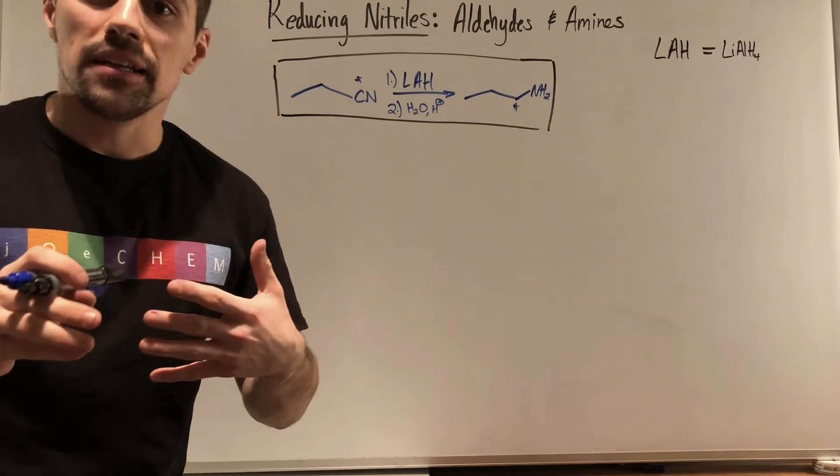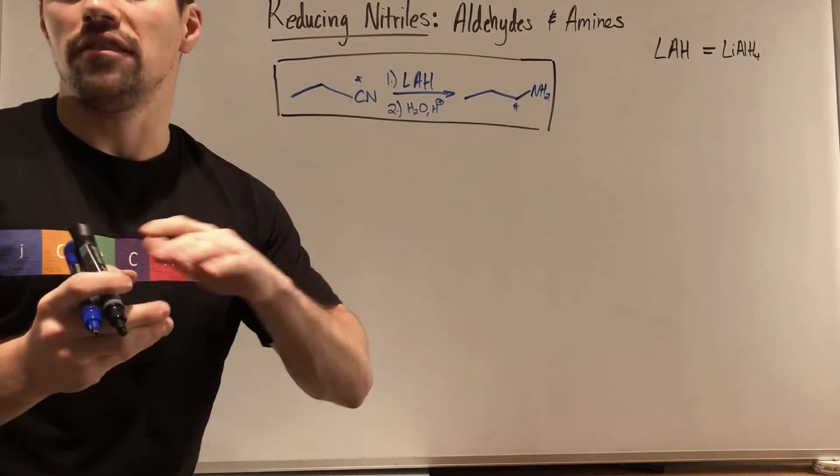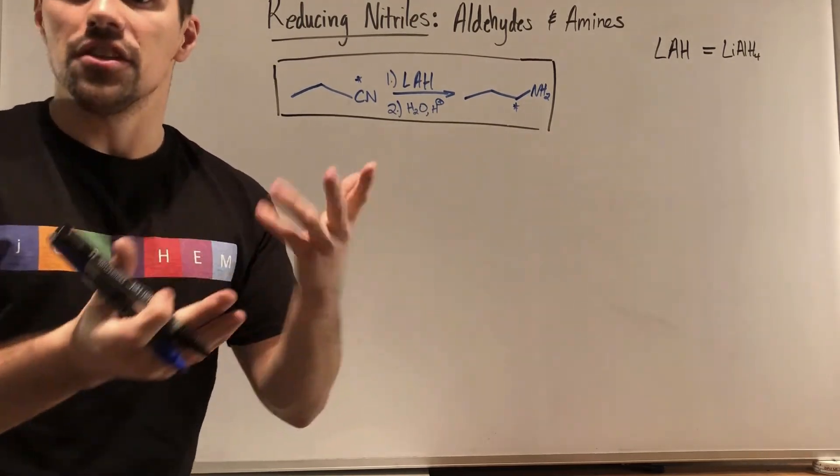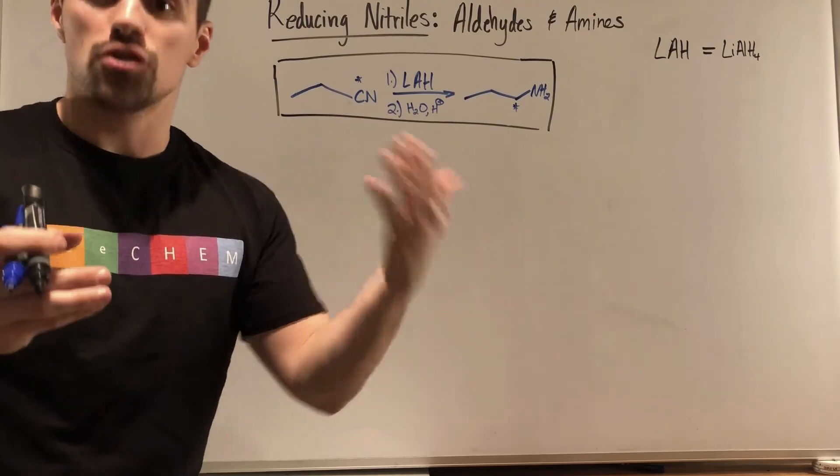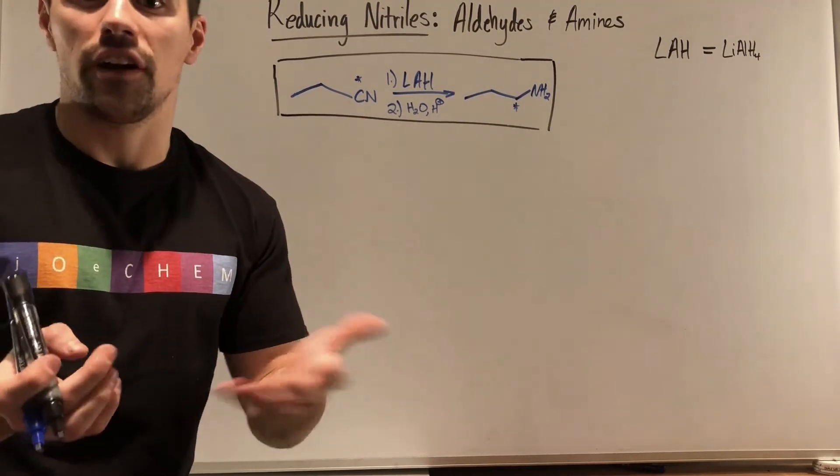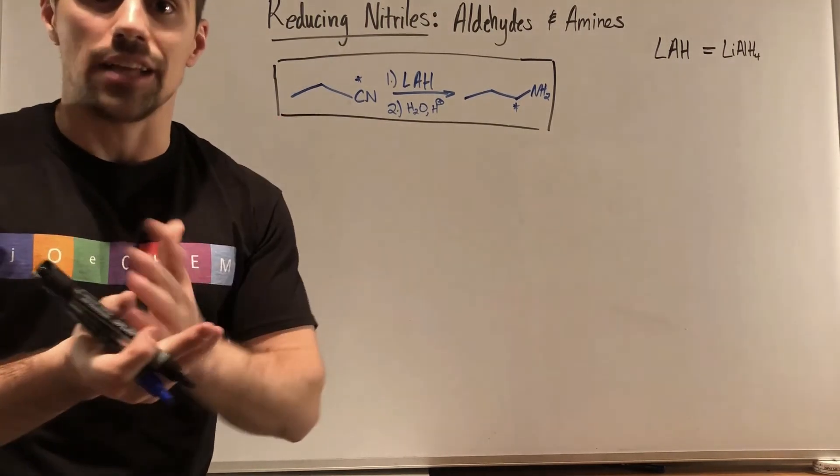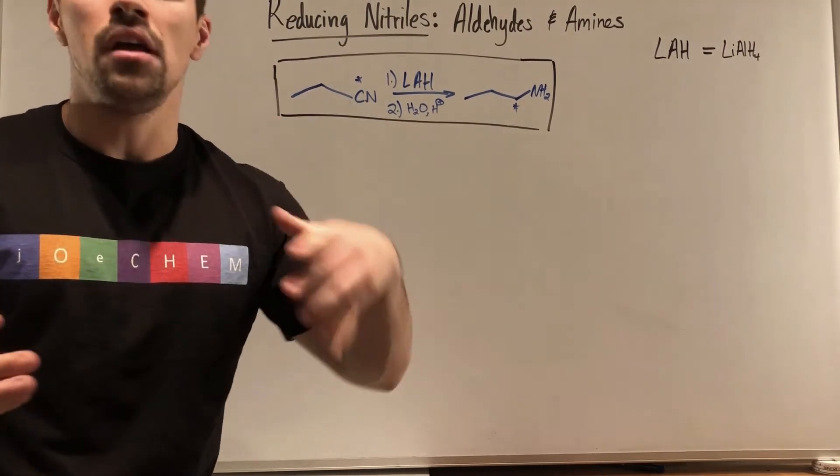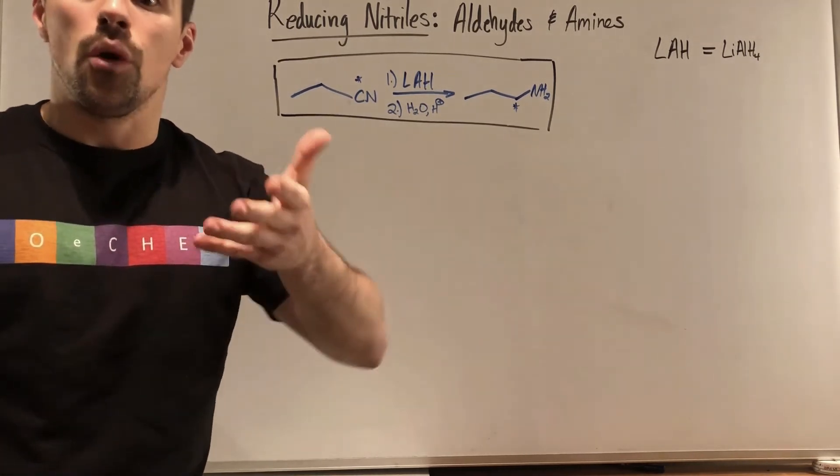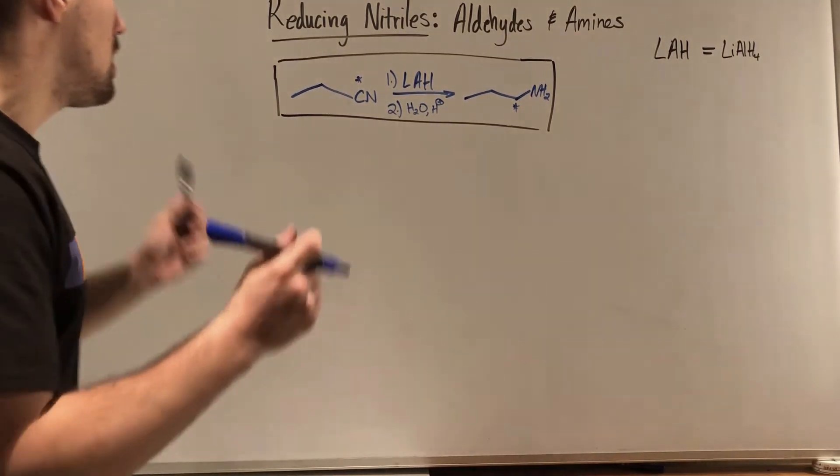So same starting material, same nitrile. We're just going to use lithium aluminum hydride. We're going to have the same acidic workup. And instead of a carbonyl, namely an aldehyde, we're going to get an amine instead. Just as a warning, this mechanism is a little bit more complex than what I'm going to draw. I'm going to draw what I've seen, not just in the textbook I'm using, but also from many, many, many online sources. There is a more complicated one that I could very well draw out. If you're watching this video and you need to learn it and you're struggling with the more complex one, leave a comment below.